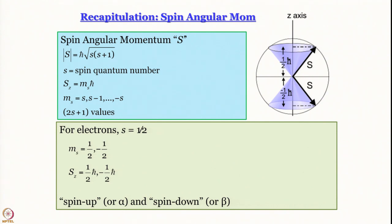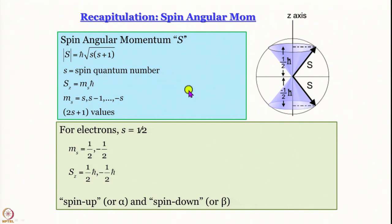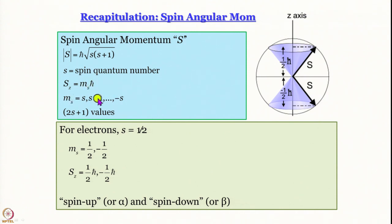The other thing we discussed is spin angular momentum. Please do not forget that the spin quantum number of an electron is s = 1/2, and m_s is plus 1/2 and minus 1/2. The spin angular momentum S is given by h-bar times the square root of s(s+1), where s is the spin quantum number, and the z-component is S_z = m_s times h-bar. When we say plus 1/2 and minus 1/2 we are talking about m_s, not s.